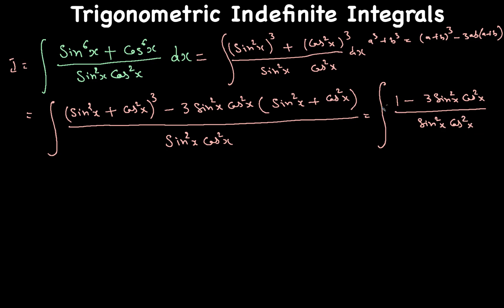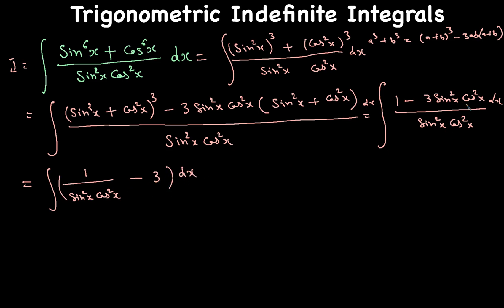Rewriting, the first part becomes 1 over (sin²x times cos²x), and the second part, 3·sin²x·cos²x divided by sin²x·cos²x, cancels out to just 3. So we have the integral of 1/(sin²x·cos²x) minus 3 dx.